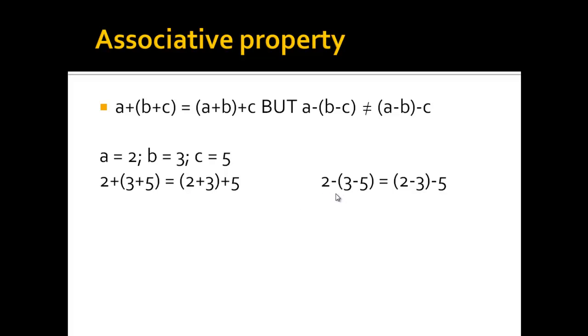Well, when you subtract numbers from each other, so 2 minus 3 minus 5 is 3 minus 5 is minus 2, then you have 2 minus minus 2, so 2 plus 2 is 4. Or 2 minus 3 is minus 1 minus 5 is minus 6. So again, here, it's the same number that you have as a result.